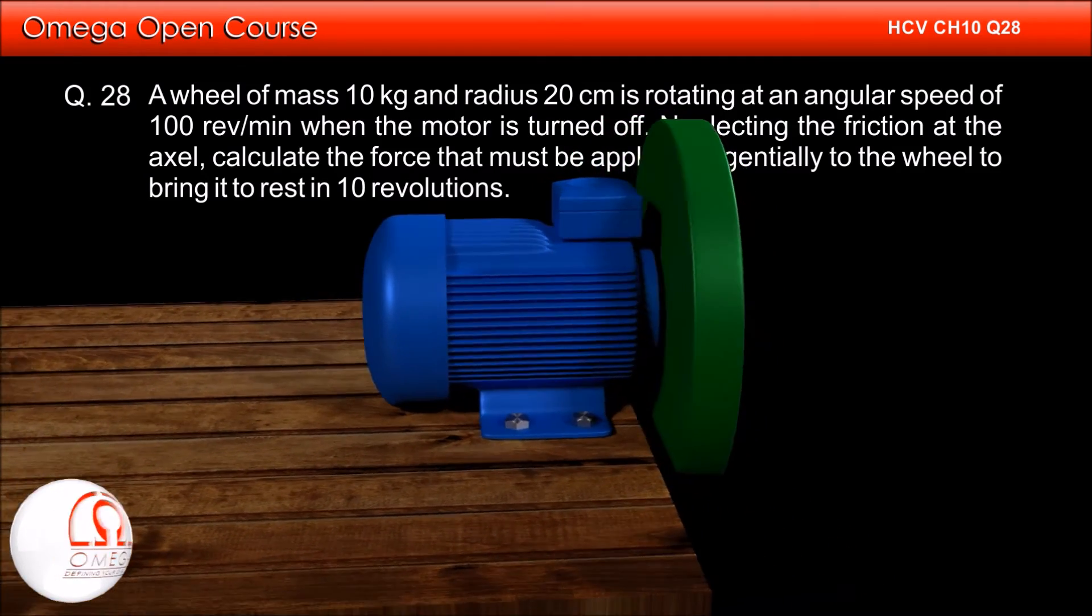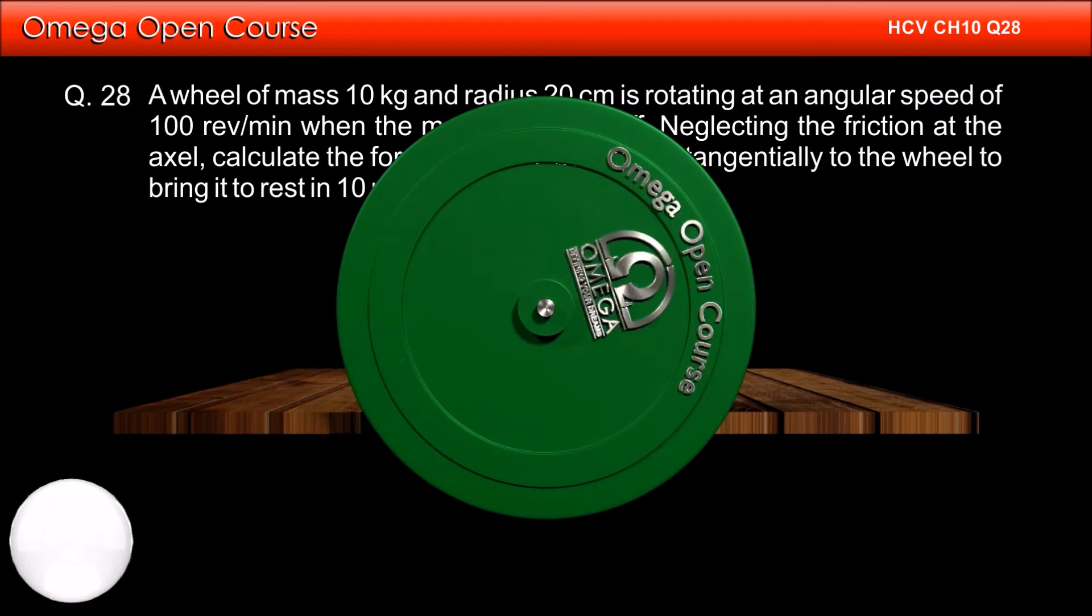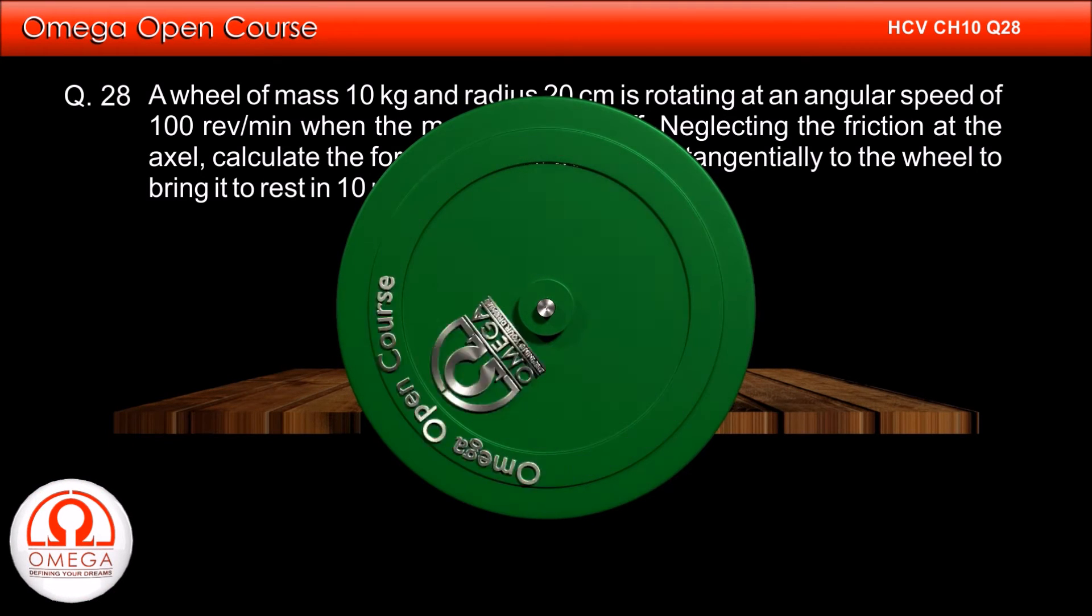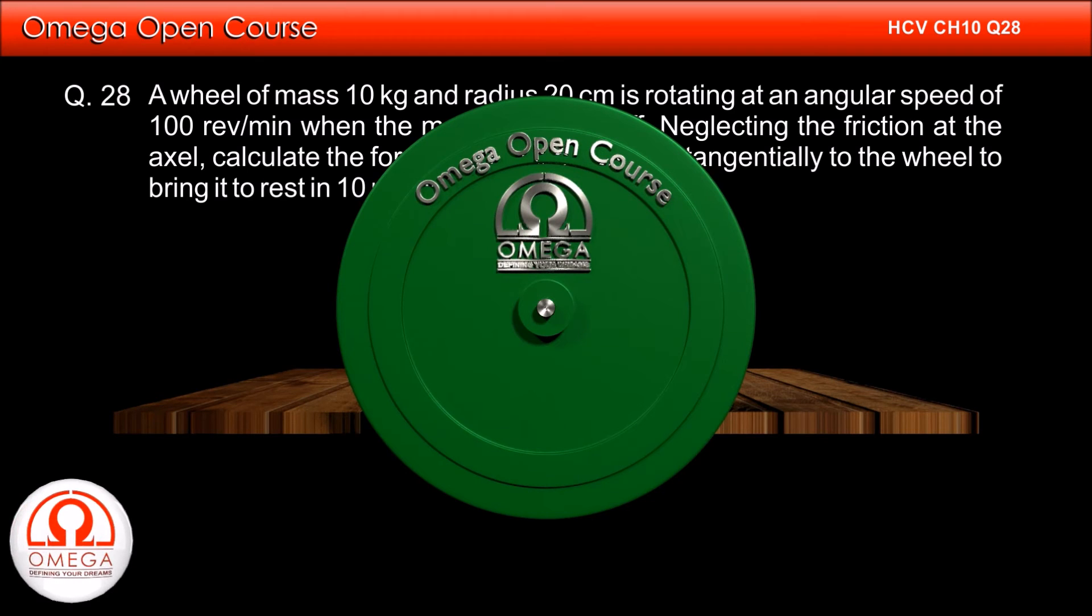A wheel of mass 10 kg and radius 20 cm is rotating at an angular speed of 100 rpm when the motor is turned off. Neglecting the friction at the axle, calculate the force that must be applied tangentially to the wheel to bring it to rest in 10 revolutions.